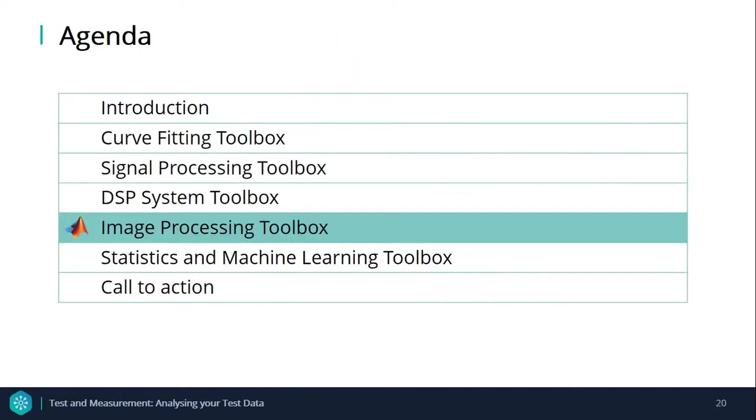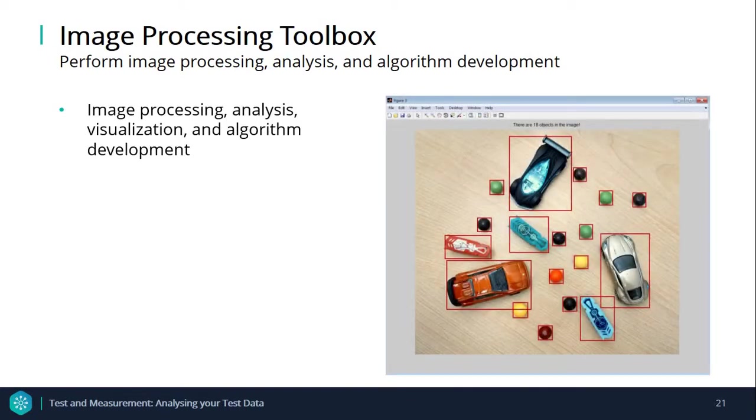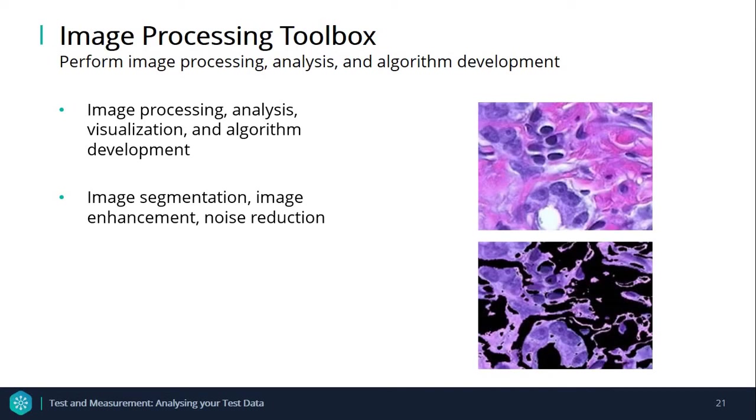So let's move on to our fourth toolbox. The Image Processing Toolbox can be used to perform image processing, analysis, and algorithm development. This toolbox provides a comprehensive set of reference standard algorithms and workflow apps for image processing analysis, visualization, and algorithm development. You can perform image segmentation, image enhancement, noise reduction, geometric transformation, image registration, and 3D image processing.